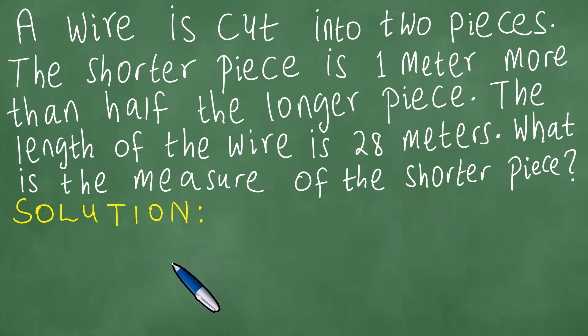Okay, so to solve this problem, there are a couple of things we need to do. First things first is to have a sketch of what is happening. Here is the wire and this wire is cut like this, so there is a shorter piece. Let's call it S and L being the longer piece.